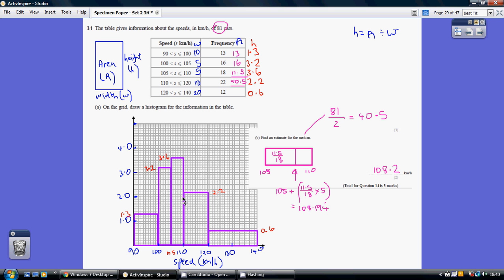That gives me the middle value. So we're going to have an area of 40.5 over here, an area of 40.5 over here and we're going to see what line we have to draw in here to give us equal area on either side.